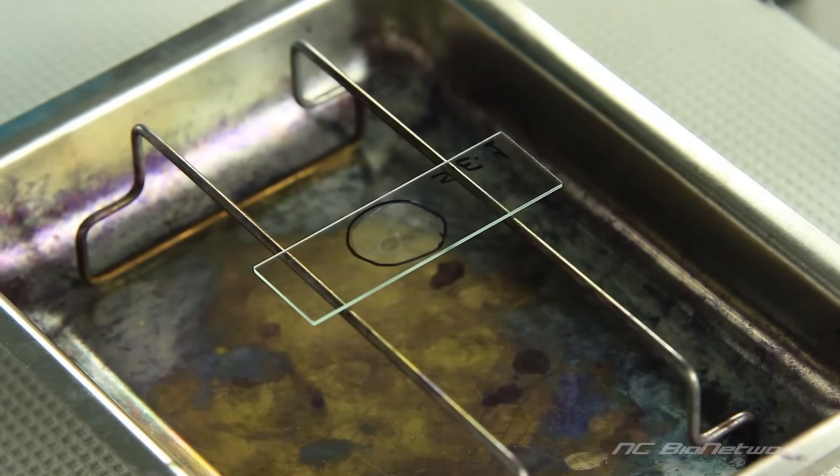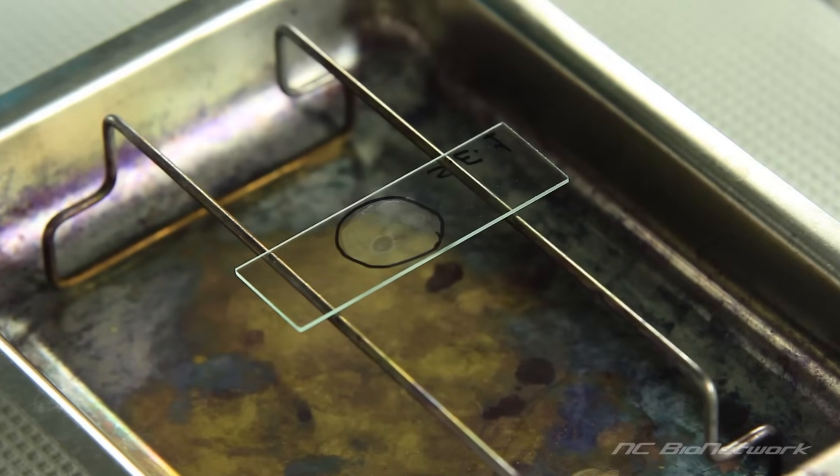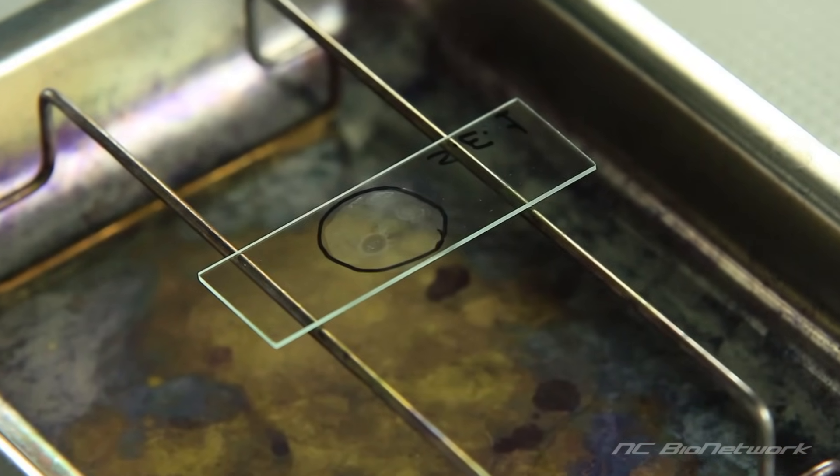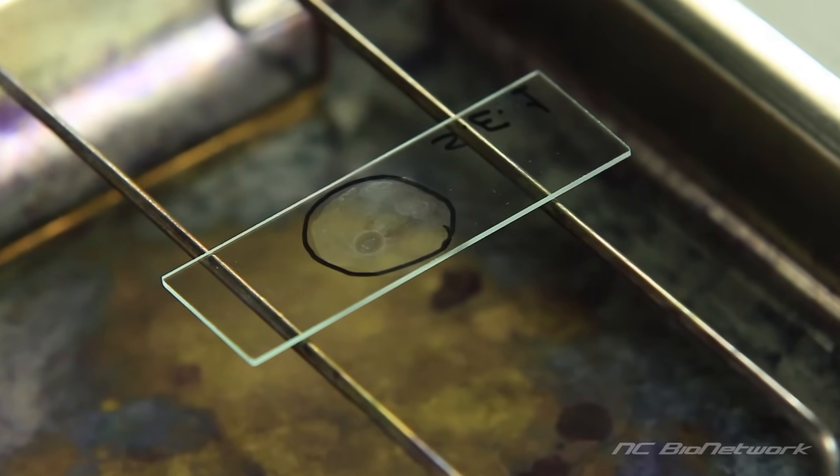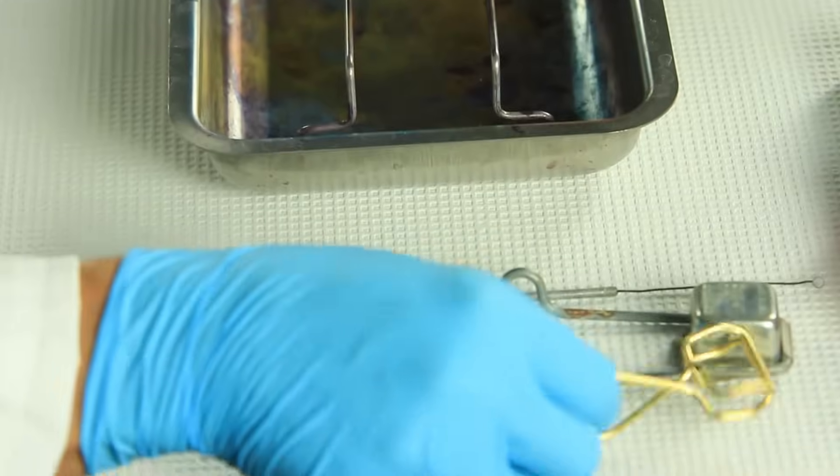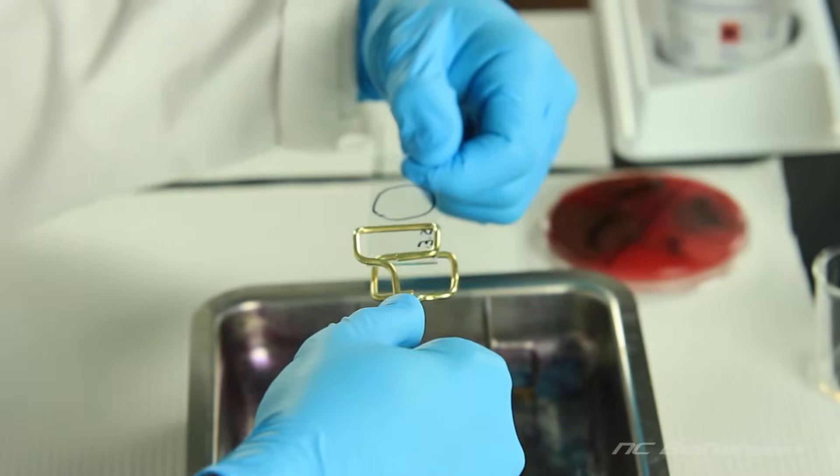Allow the slide to air dry at room temperature. The time will vary depending on the size of the smear. You will know the slide is dry when you see a thin white haze. Next, heat-fix the slide by passing it through a flame three times.